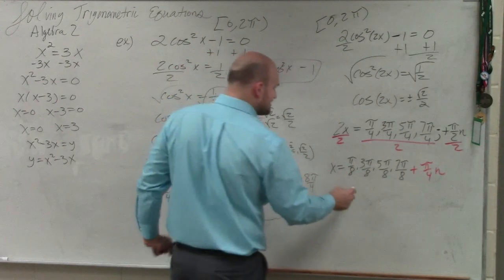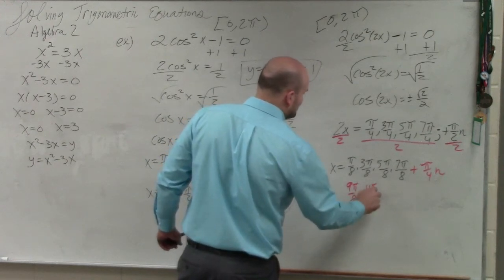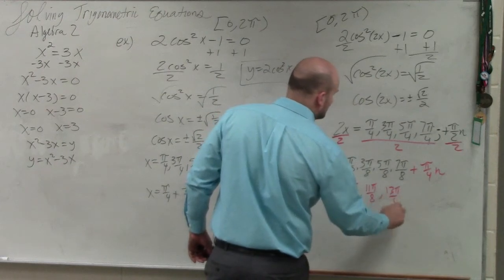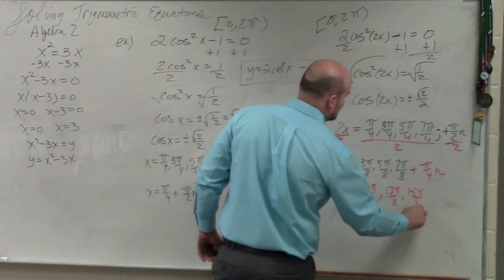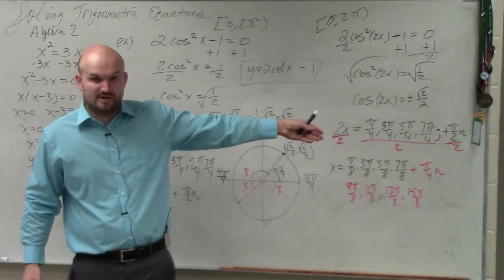So my other set of solutions are going to be 9 pi over 8, 11 pi over 8, 13 pi over 8, and 15 pi over 8. If I do 17 pi over 8, that's over 2 pi. Would everybody agree with me?